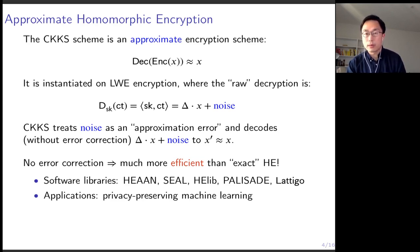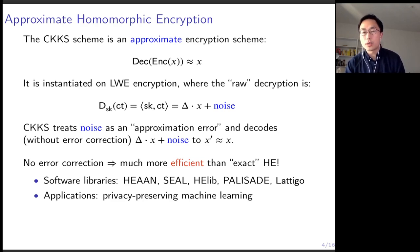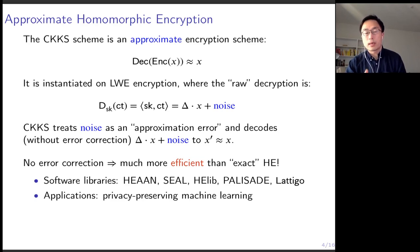The CKKS scheme considers this noise as a sort of approximation error. It does not do any error correction; instead, the CKKS scheme decodes the entire noisy encoding of X into X' that is only approximately equal to X. In many applications, especially with numerical computations, approximate results are already acceptable. By not doing error correction, the CKKS scheme becomes much more efficient compared to standard exact HE schemes. CKKS has been implemented in many open source FHE libraries and used in many privacy-preserving machine learning applications.